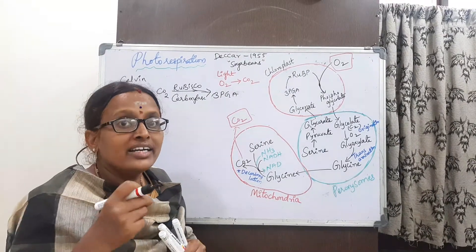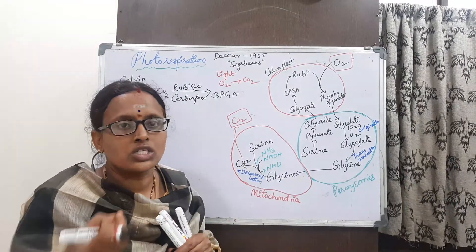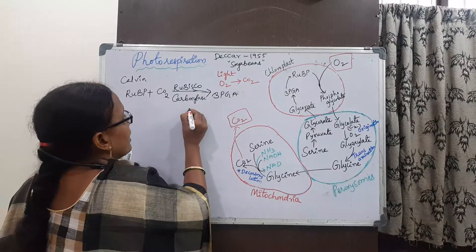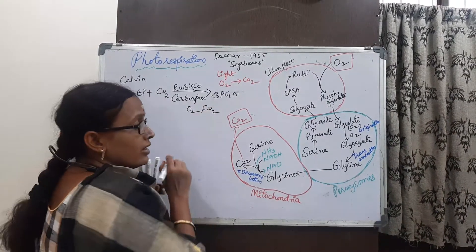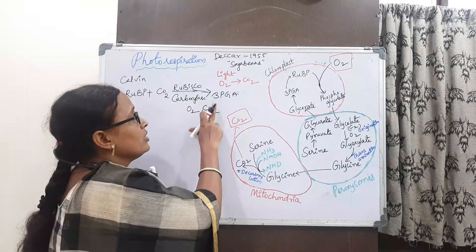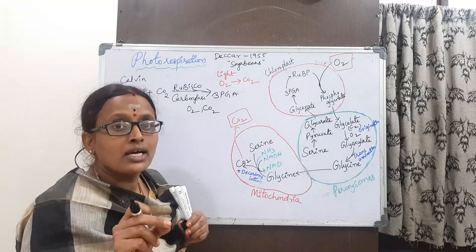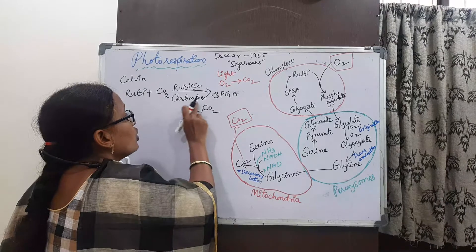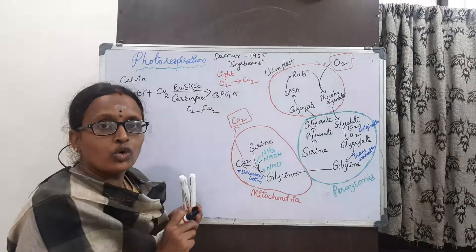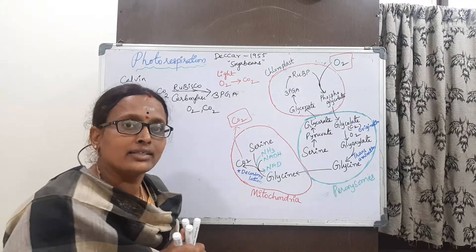Rubisco has affinity to bind with both oxygen as well as carbon dioxide. When it binds with carbon dioxide, generally there is a synthesis of sugars. But when it binds with oxygen, the process is known as photorespiration. When the conditions change, Rubisco's behavior changes.